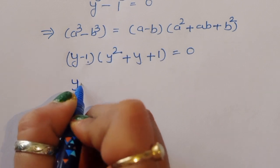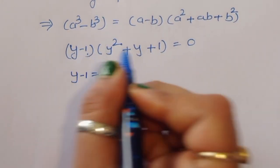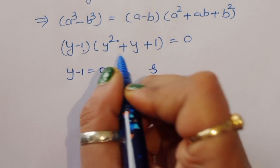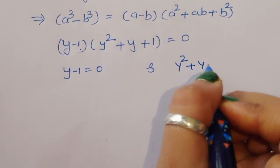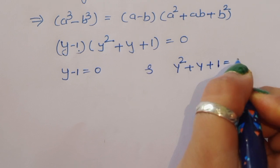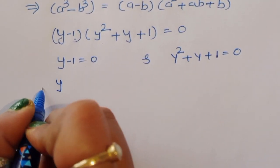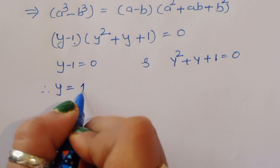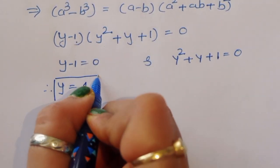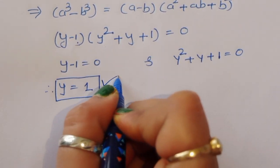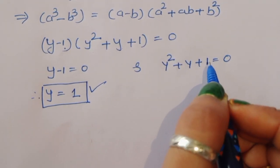Now we have two equations: the first is y - 1 = 0, and the second is y² + y + 1 = 0. From the first equation, y - 1 = 0, therefore y = 1. This is the first solution.